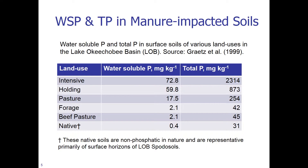Let us look at water soluble P and total P in manure-impacted soils. These are surface soils from various land uses in the Lake Okeechobee Basin, ranging from intensive and holding areas, pasture, forage, beef pasture, and native areas. These native areas are non-phosphatic in nature and are represented primarily by surface horizons of the Lake Okeechobee Basin's water soils. The highest water soluble P and total P are in the intensive and holding areas, and the lowest is in the native areas where there have been no anthropogenic activities and they are non-phosphatic.